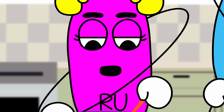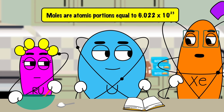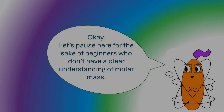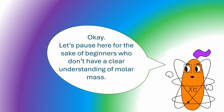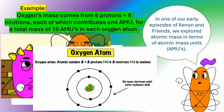Moles? Like those things growing on great-grandma's face? No. In chemical formulas, moles are atomic portions equal to 6.022 times 10 to the 23rd power, or particles of a substance. Let's pause here for the sake of beginners who don't have a clear understanding of molar mass. In one of our early episodes of Xenon and Friends, we explored atomic mass in terms of atomic mass units, or AMUs. For example, oxygen's mass comes from 8 protons plus 8 neutrons, each of which contributes 1 AMU for a total mass of 16 AMUs in each oxygen atom.